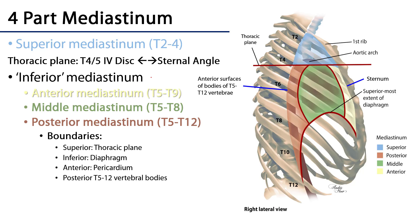With the four-part schema, the superior mediastinum is divided from the remainder of the mediastinum by the thoracic plane. That's the plane that begins at the sternal angle and moves posteriorly through the intervertebral disc between T4 and T5. The remaining groups are divisible by boundaries established by the pericardium, so the heart within the pericardium establishes the middle mediastinum.